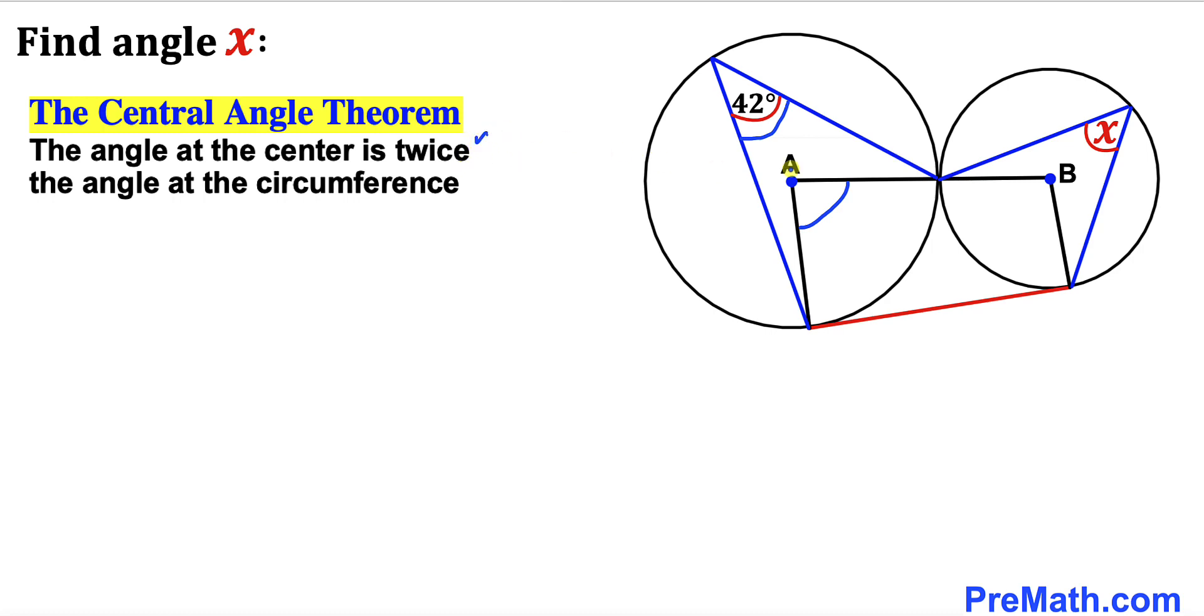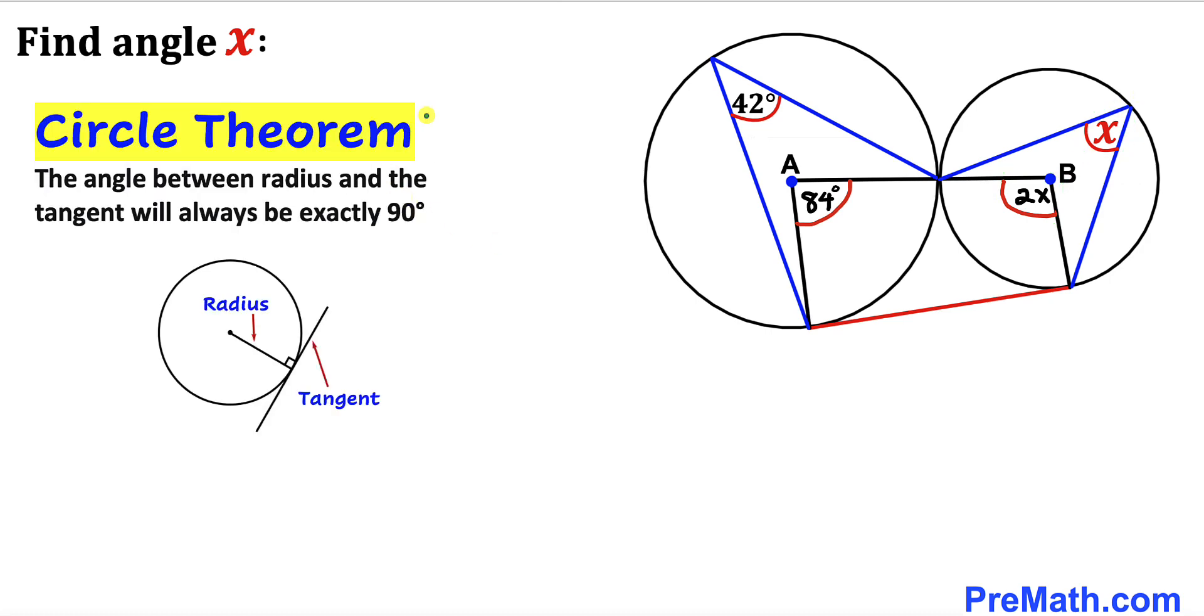According to this theorem, this angle has to be 84 degrees. Now let's focus on this smaller circle—this is our angle at the center and this is our angle at the circumference. Therefore, our angle at this center is going to be twice this one, which is 2x.